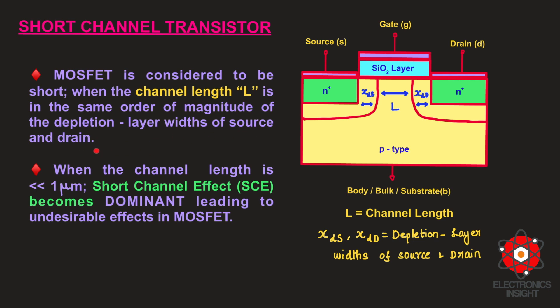First let us understand the three different terms. One is channel length, the other one is depletion layer width of source and drain separately. The depletion region of source is at this side and the depletion region of drain is towards the drain end. The region width is marked as X suffix DS, and at the drain end it is marked as X suffix DD, which is the width of depletion region of drain side.